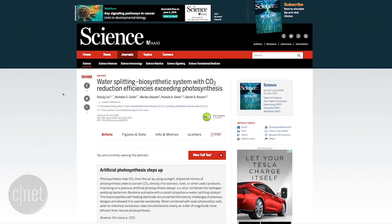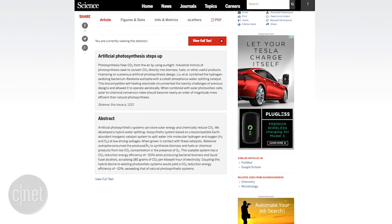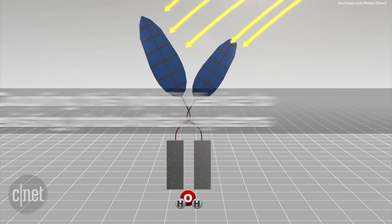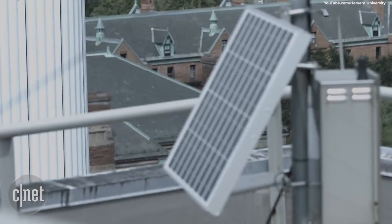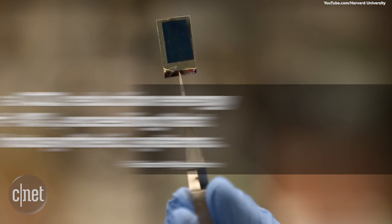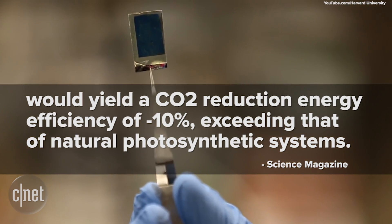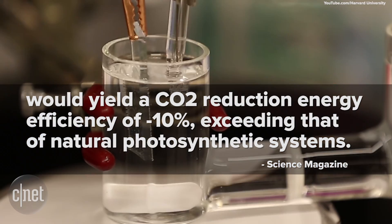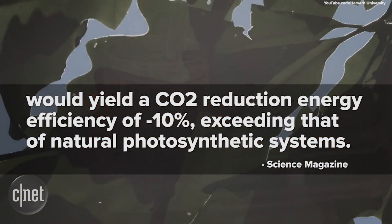According to a Science magazine article abstract about the bionic leaf, coupling this hybrid device to existing photovoltaic systems would yield a CO2 reduction energy efficiency of 10%, exceeding that of natural photosynthetic systems.